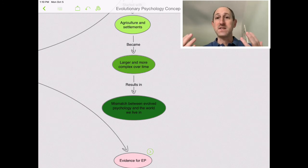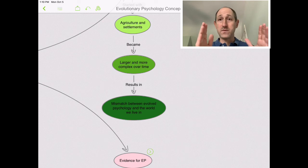And what that results in is what is called a mismatch. There's a mismatch between the way we evolved, what worked in the past, and what we have to deal with now.